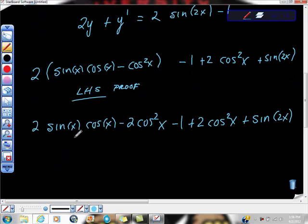Go through here. Check this out. What is 2 sine x cosine x? Double angles formula. So that gives us sine 2x. Look, negative 2 cosine squared x, positive 2 cosine squared x. Plus this one here, plus sine 2x minus 1. What does all this equal? 2 sine 2x minus 1.